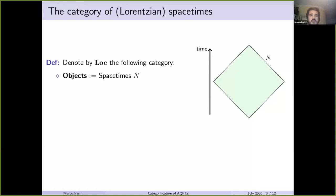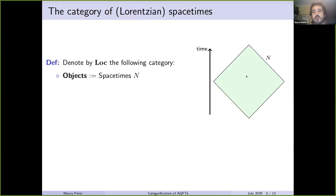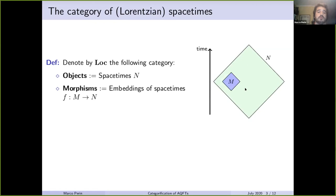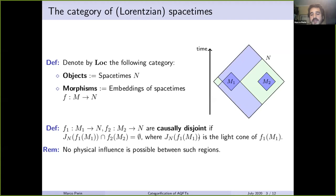The main interest for us today is the category of Lorentzian spacetimes. We denote by Loc the following category. The objects are the spacetimes — a spacetime for me is just one of these diamond regions in which every point can be identified with a position and a time coordinate. For example, you can think of your room in a certain time span, say one hour. These spacetimes have the property that you can always tell the future and the past of an event. The morphisms are just the embeddings of spacetimes — inclusions of smaller diamond regions into bigger ones. We also define f1 from m1 to n and f2 from m2 to n as causally disjoint if J_n(f1(m1)) intersected with f2(m2) is equal to the empty set, where J_n(f1(m1)) is the light cone of f1(m1).